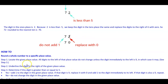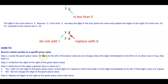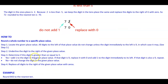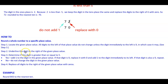Here is how to round a whole number to a specific place value. Step 1: Locate the given place value. All digits to the left of that place value do not change, unless the digit immediately to the left is a 9, in which case it may change as we'll see in step 3. Step 2: Underline the digit to the right of the given place value.